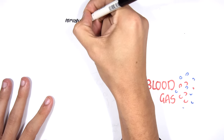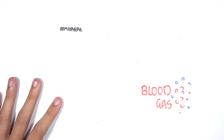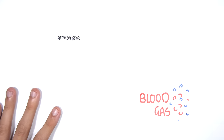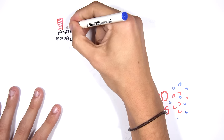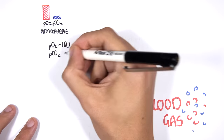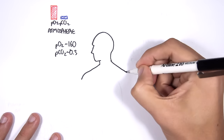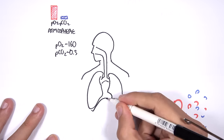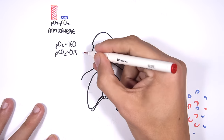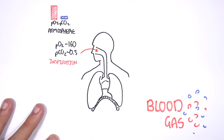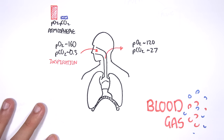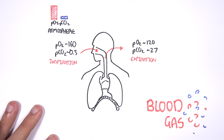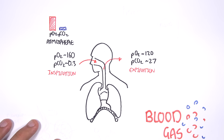To begin, we first must look at the partial pressure of oxygen in the atmosphere. We have a significantly higher partial pressure of oxygen than carbon dioxide in the atmosphere. The partial pressure of oxygen is about 160 mmHg and the partial pressure of carbon dioxide is 0.3 mmHg. What we breathe out is a partial pressure of oxygen of about 120 mmHg and a partial pressure of carbon dioxide of about 27 mmHg. This tells us two things: we don't use up all the oxygen we breathe in, and we only produce a little bit of carbon dioxide.